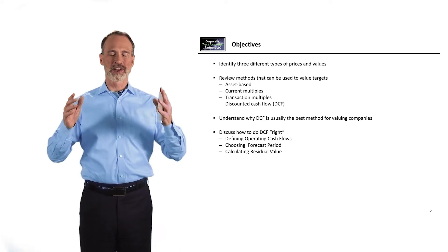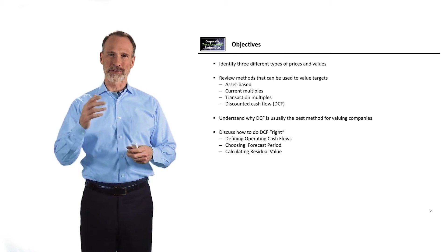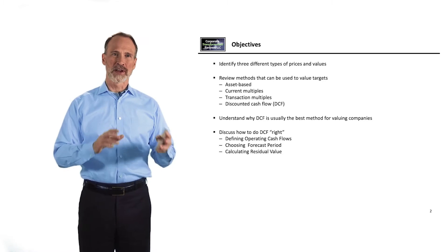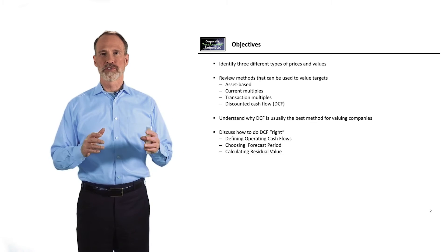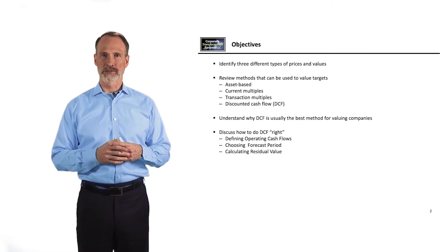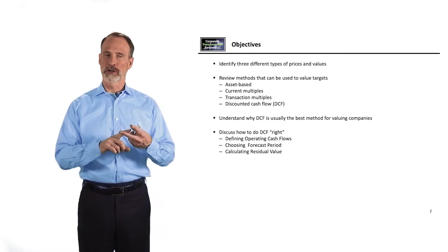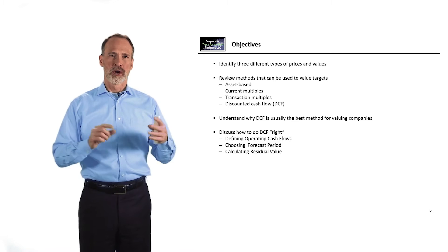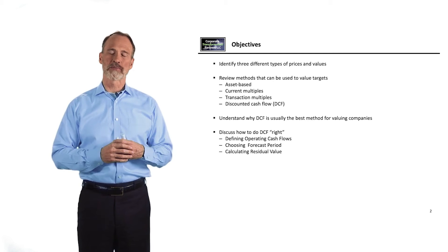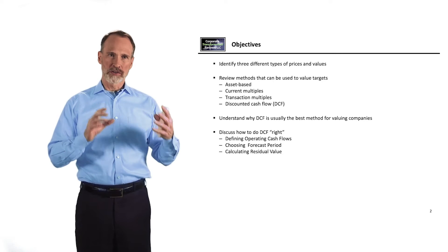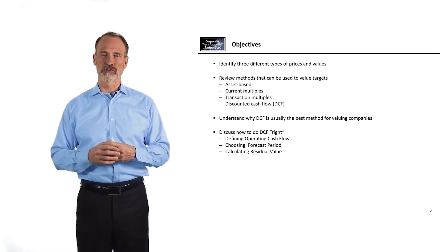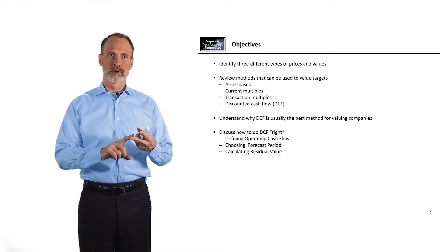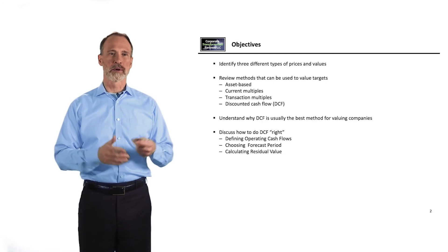We've been talking about it for a long time — it's time we really focused on the issue of valuing transaction targets. We're now at Section 9. The objectives are to identify three different types of prices and values, review a range of valuation methods including asset-based approaches, current multiples, transaction multiples, and DCF. We'll understand why DCF is usually the best method, and discuss three things you need to do to get DCF right: define operating cash flows correctly, choose an appropriate forecast period, and calculate residual value.